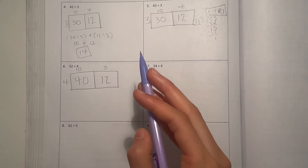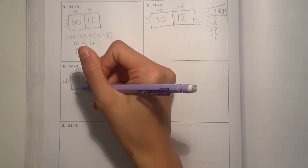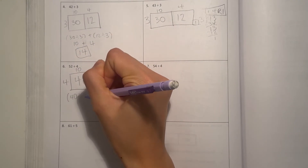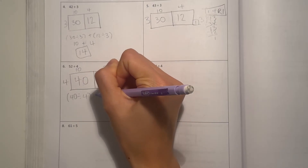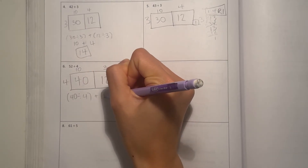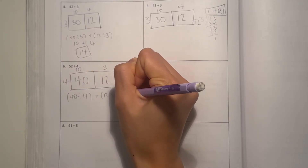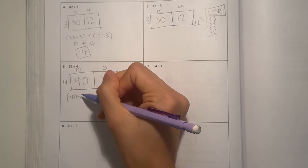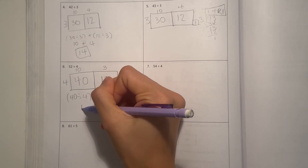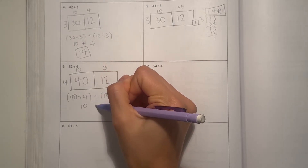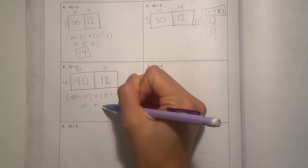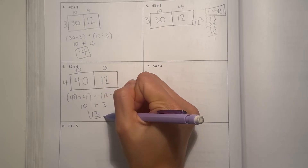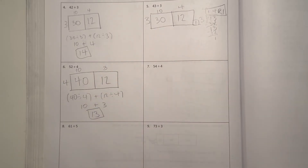But let's check with the distributive property. 40 divided by 4 plus 12 divided by 4: 40 divided by 4 is 10, plus 12 divided by 4 is 3. So our answer would be 13.